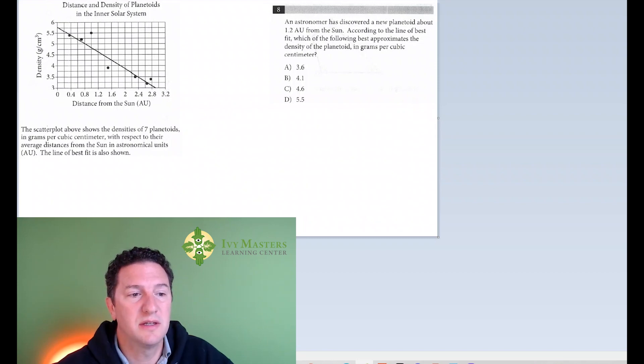And below it reads, the scatterplot above shows the density of seven planetoids in grams per cubic centimeter with respect to the average distance from the Sun in astronomical units AU. The line of best fit is also shown.